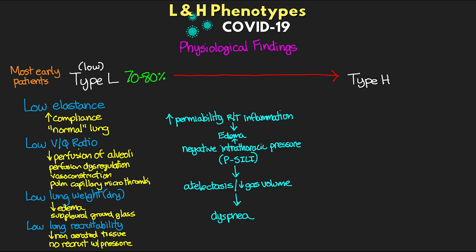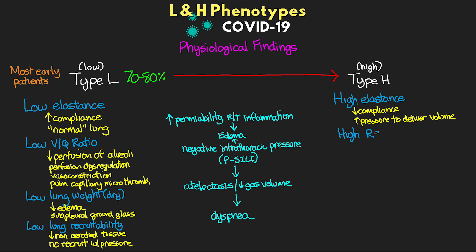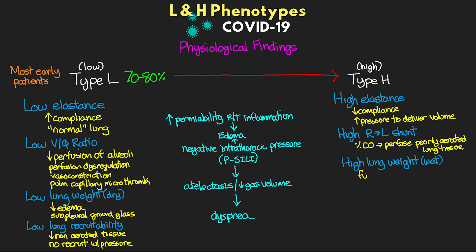L-type patients may stay in that state for a while, then either improve or progress to worsening. Factors such as increased permeability due to ongoing inflammation can result in edema, and negative intrathoracic pressure can also contribute — this is referred to as patient self-inflicted lung injury. The increasing edema can lead to atelectasis and decreased gas volume, which is when dyspnea develops, worsening these processes and ultimately leading to a transition to the H phenotype.